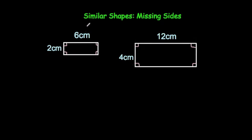Watch the video on similar and congruent shapes to see more detail, but basically similar shapes is where one shape is an enlargement of another one. In other words, the sides have all been multiplied or divided by a certain number, but all the angles remain the same.